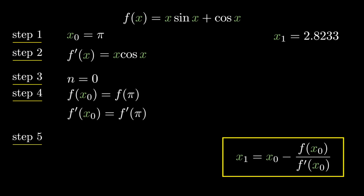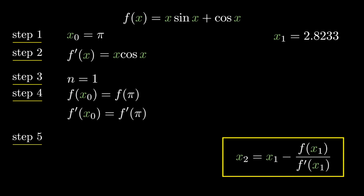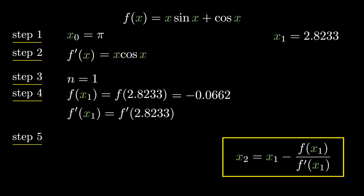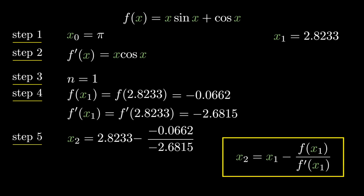Next we need to find x₂, so let's substitute n=1 in the Newton-Raphson formula: x₂ = x₁ − f(x₁)/f'(x₁). f(x₁) = f(2.8233) = −0.0662, and f'(x₁) = f'(2.8233) = 2.6815. Substituting these values, we get x₂ = 2.7986. This is not the same as x₁, so let's continue.